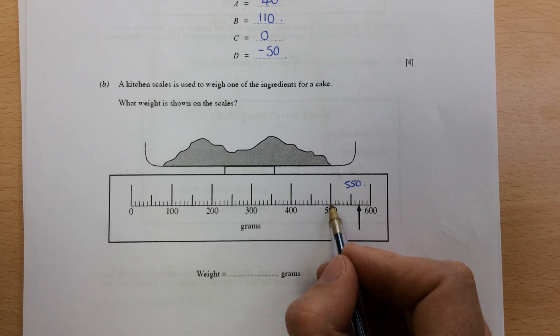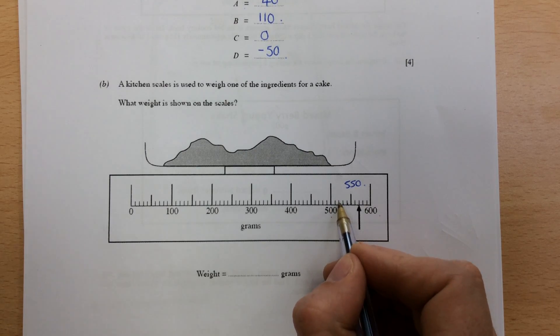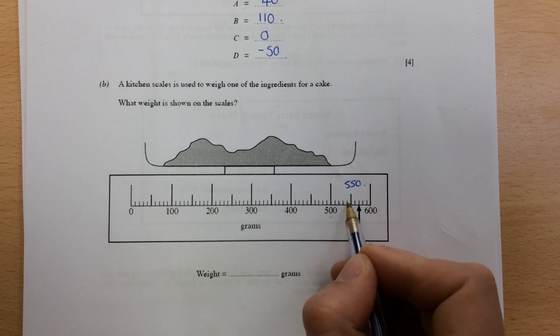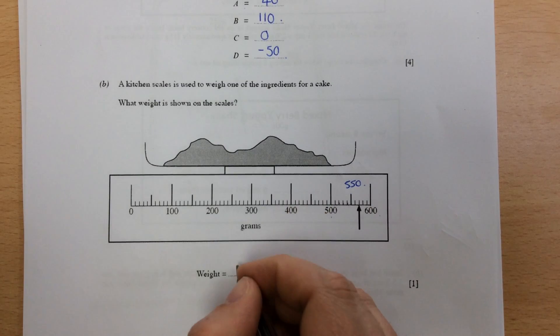So each one is worth 10. So 510, 20, 30, 40, 50. So double check it. So this time now we've got 550, 560, 570.